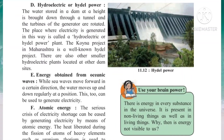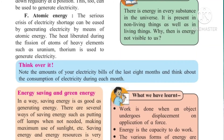The next renewable energy source is atomic energy. The serious crisis of electricity shortage can be eased by generating electricity by means of atomic energy. The heat liberated during the fission of atoms of heavy elements such as uranium and thorium is used to generate electricity.